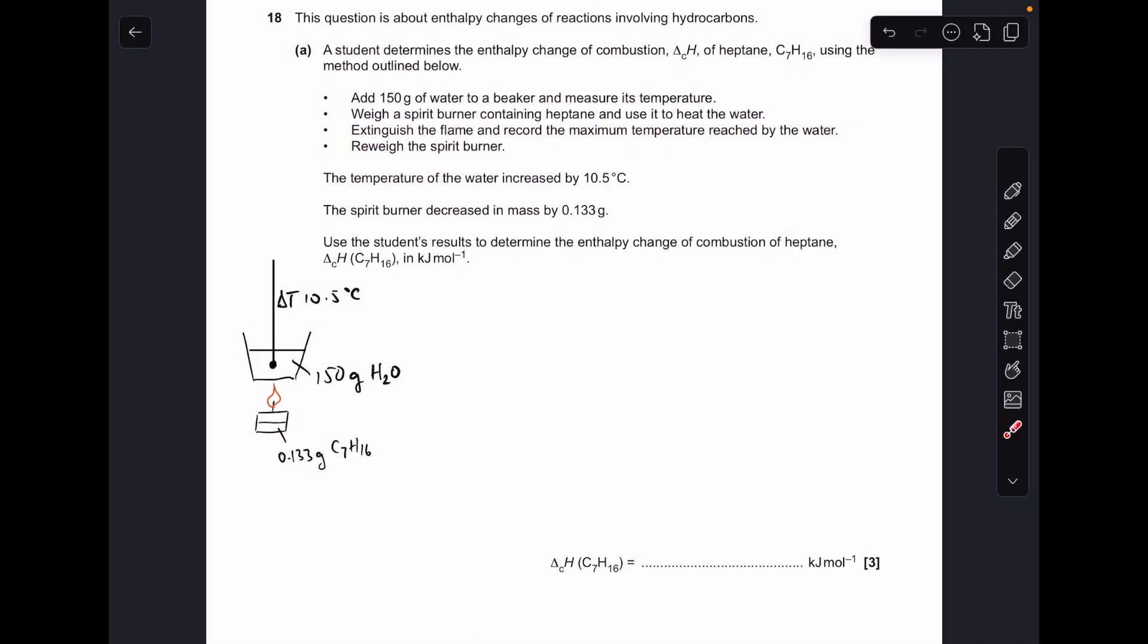Okay so make a start. You can see I've drawn up a little diagram just to represent what happened in the experiment. So they've taken heptane and they've burned 0.133 grams, heated up 150 grams of water and the temperature change is 10.5 degrees C. Obviously it's got hotter.